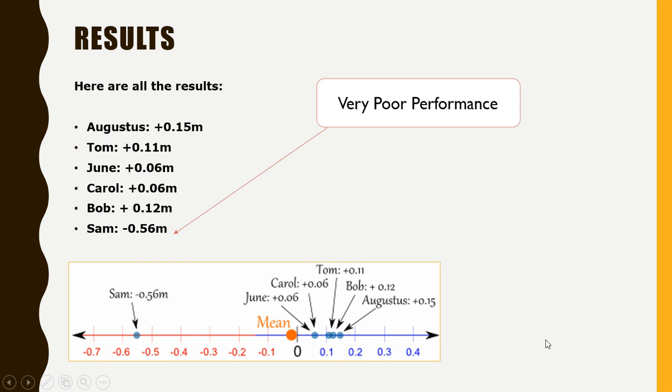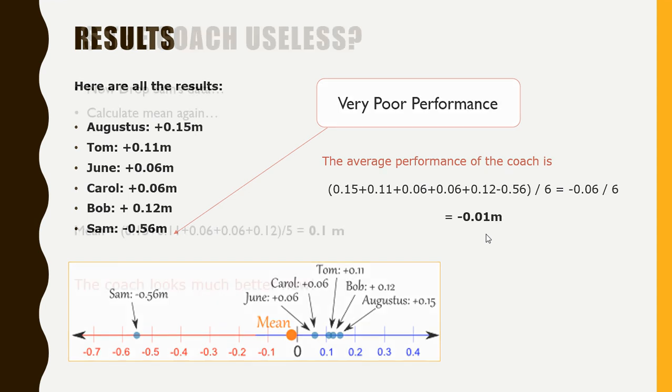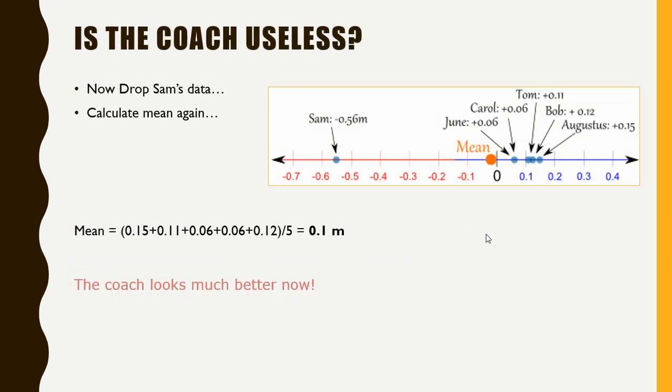Now if I want to understand the overall performance of the coach and calculate the mean, it gives me a value of negative 0.001 meter, which shows that the overall performance of the coach is negative. That is, since the time the coach has joined this team, the overall performance actually did not increase but it got decreased. So can we say that the coach is useless because the overall performance of the team came out to be negative?